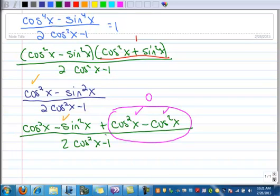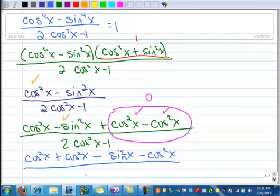So this is over 2 cosine squared x minus 1. All right, so I can rearrange the numerator. So let's do that, rearrange the numerator. So I've got a cosine squared x and plus a cosine squared x minus sine squared x minus a cosine squared x, all over 2 cosine squared x minus 1. I have to start a new page here because I'm running out of room.